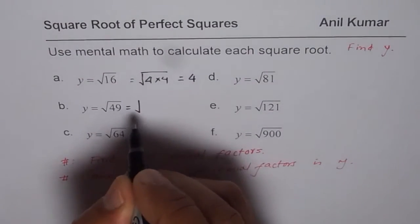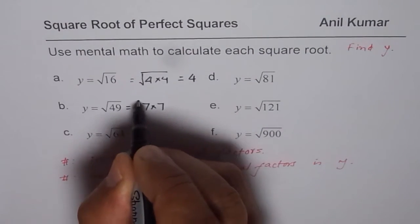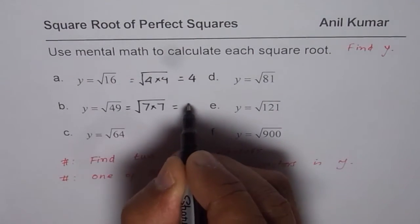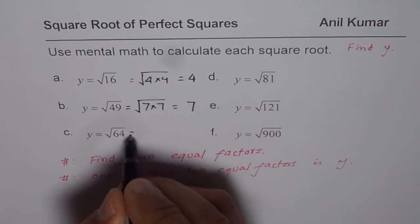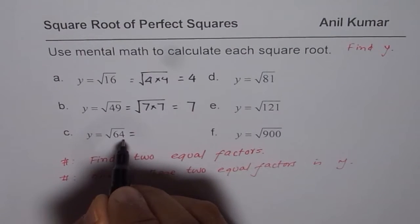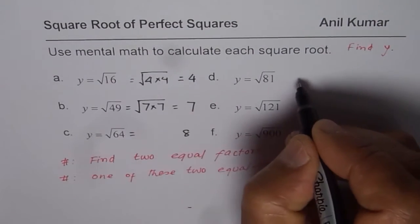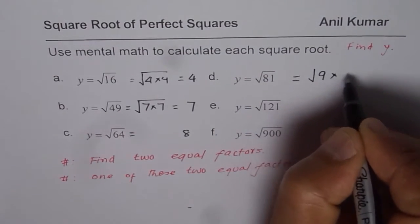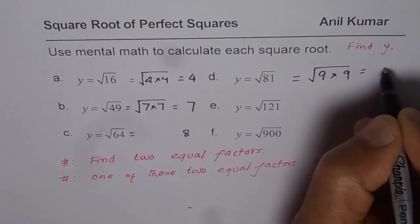So 7 times 7 is 49 and therefore square root of 49 is 7. Similarly, we get square root of 64 as 8. Square root of 81 as it is 9 times 9, so square root is 9.